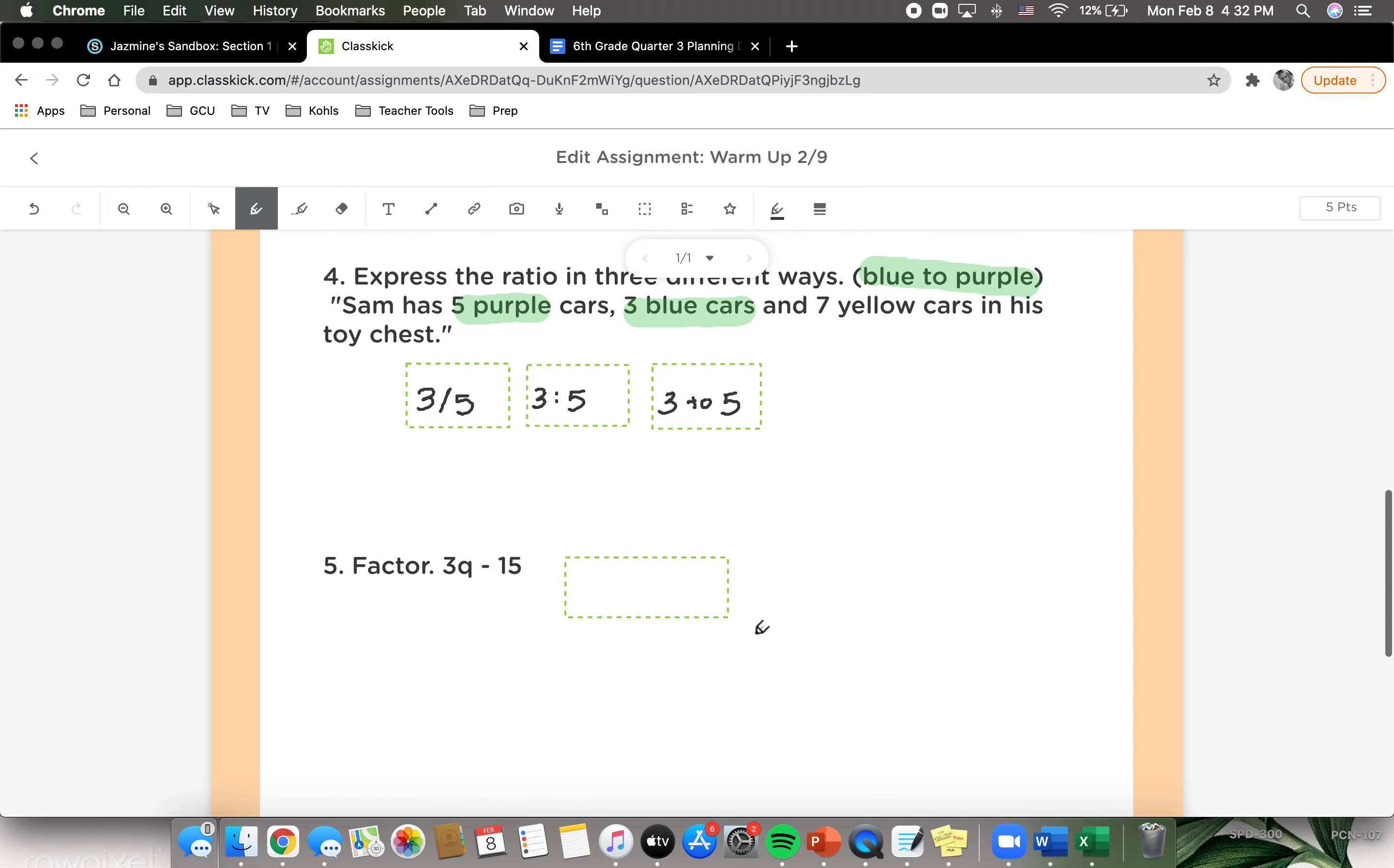Looking at number 5, it says factor 3q minus 15. So we need to find the greatest common factor first. For 3 and 15, the highest factor that can go into 3 is going to be 3. Well, we know 3 goes into 15, so our greatest common factor is going to be 3.